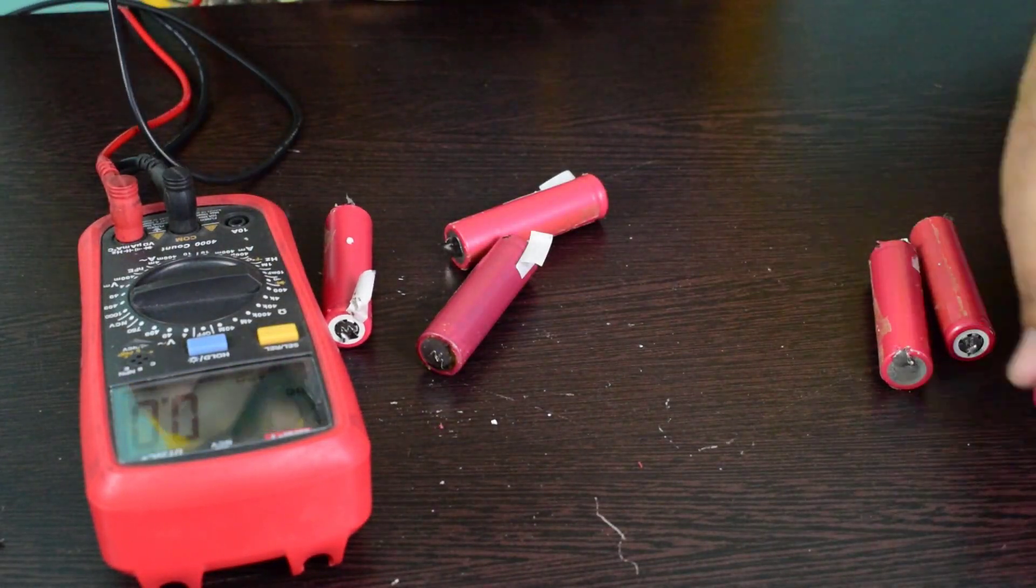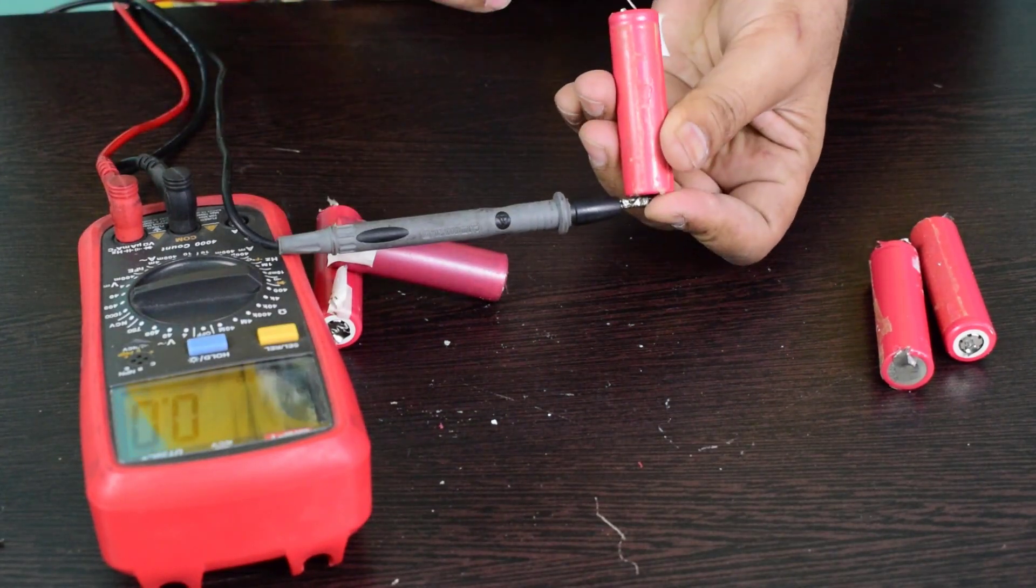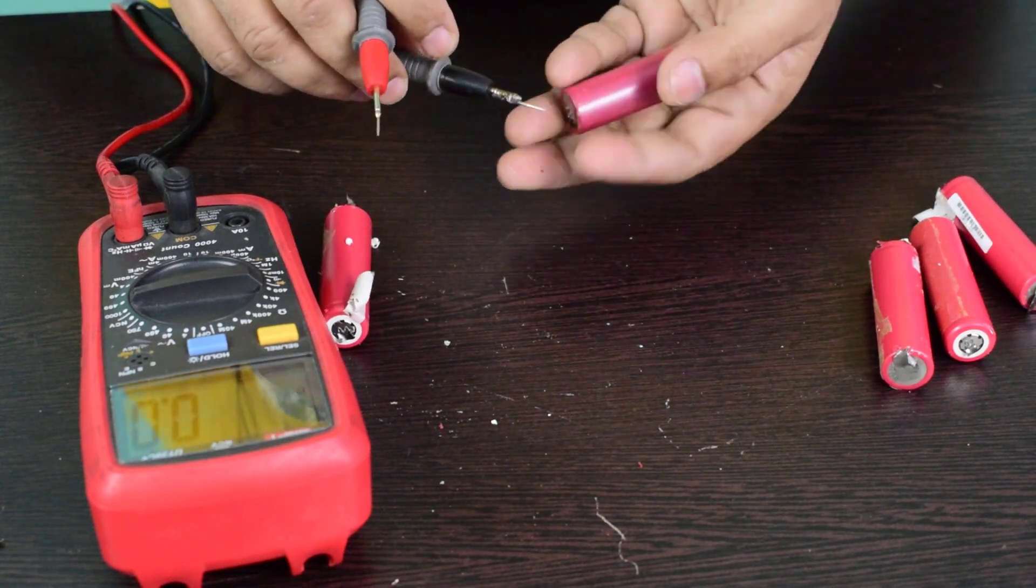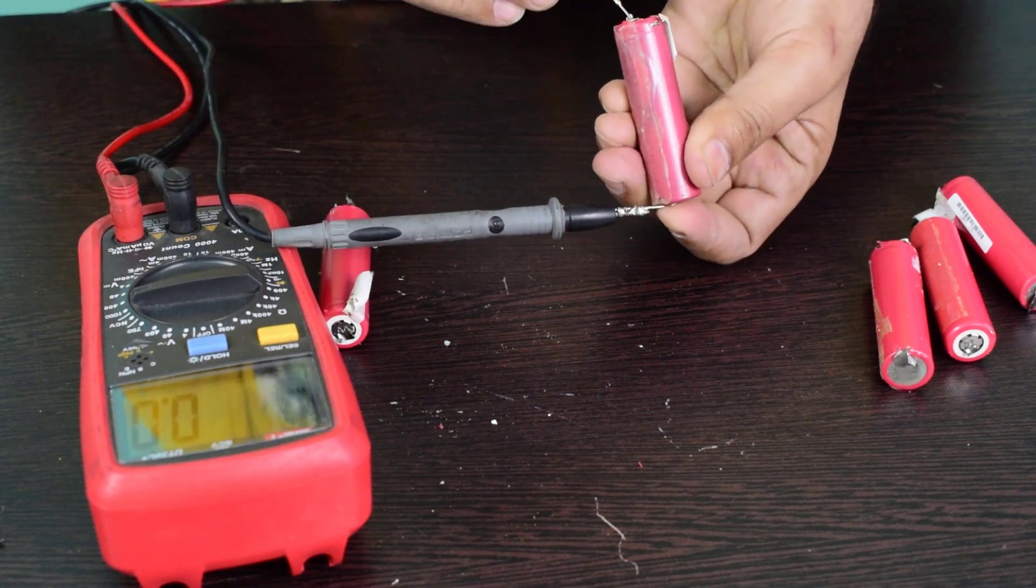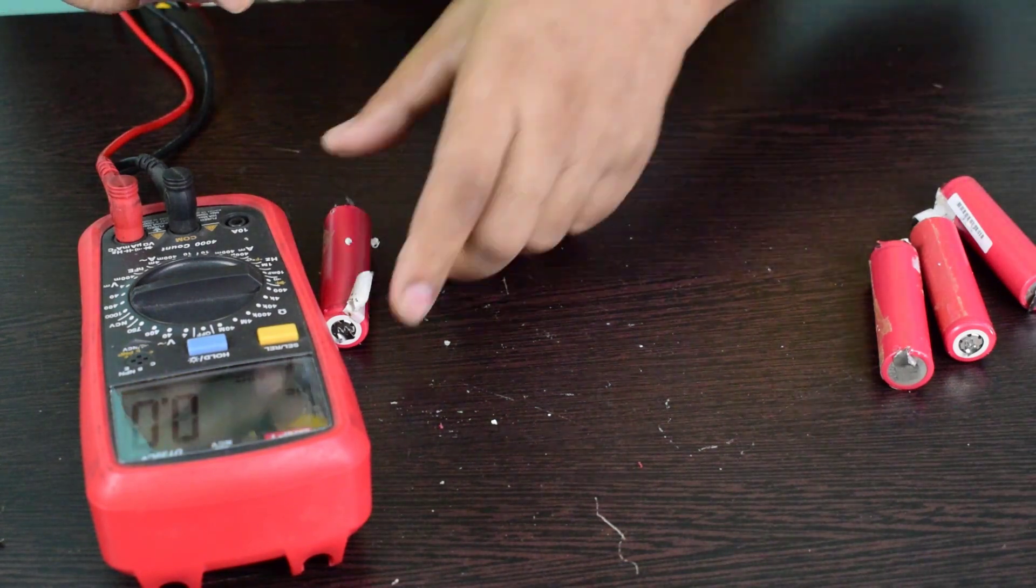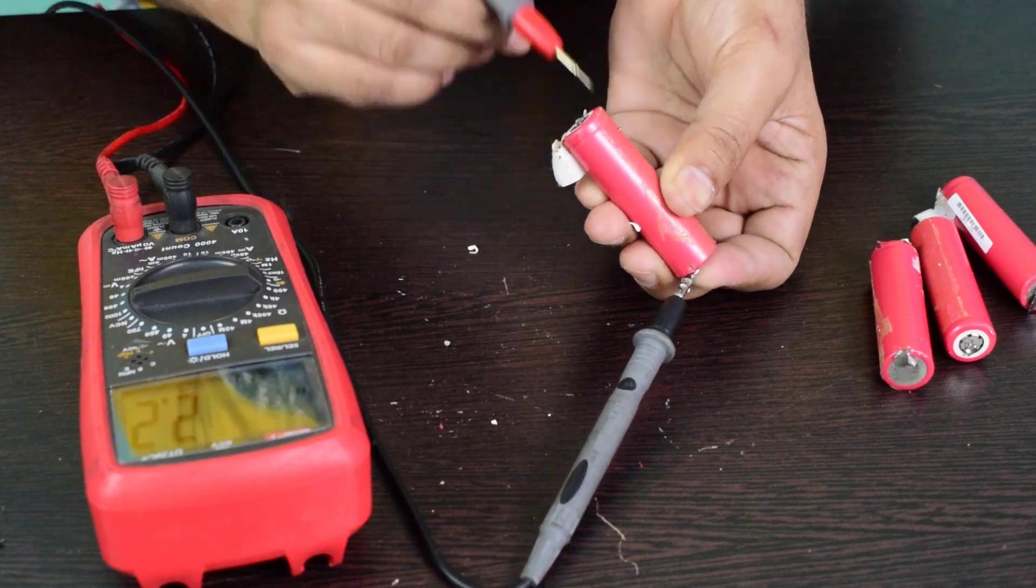This cell is not giving any voltage, let us remove it. This cell is also giving 1.2 volts and this one is not giving any type of voltage difference, and this cell is giving 2.2 volts.